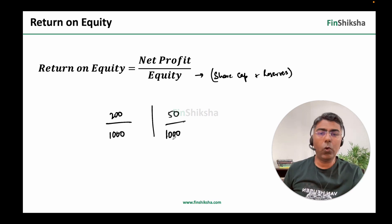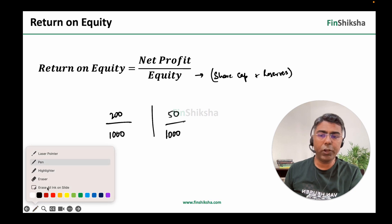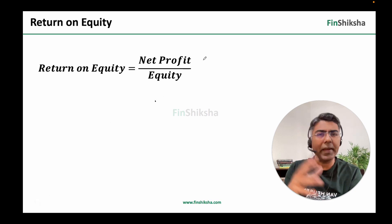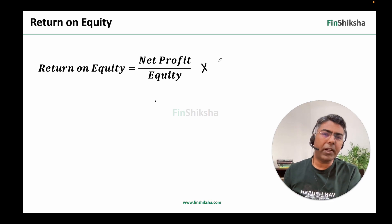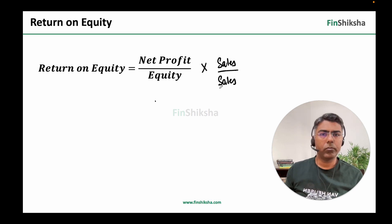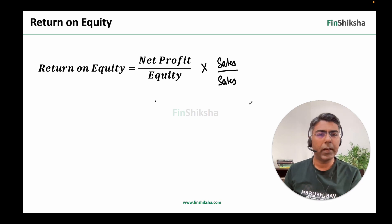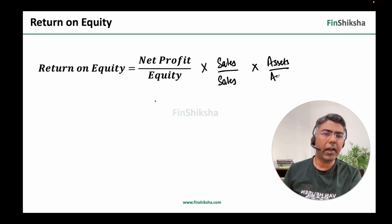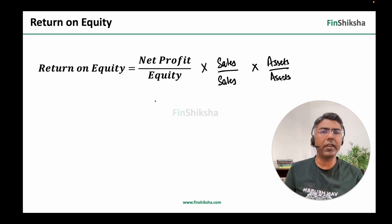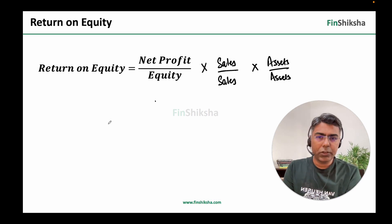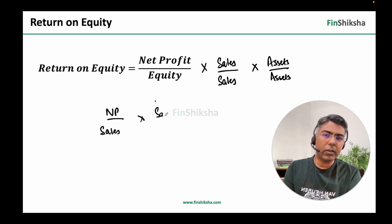Now let's go one step further. We know return on equity is net profit divided by equity. Let's do some mathematical adjustment — multiply this by sales upon sales, and also by assets upon assets. Numerator and denominator get multiplied by the same number, so mathematically we can do this. And then we rearrange, giving us: net profit upon sales, multiplied by sales upon assets, multiplied by assets upon equity.